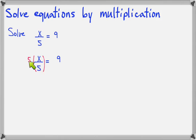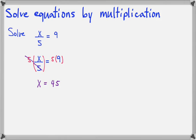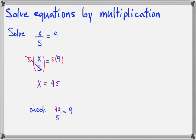Because I put a 5 in the top of the left side, I'm now going to put a 5 in the top for the right side. Now the 5s will cancel, and all I'm left with is x equals 5 times 9, which is 45. And if you check it out, if you put 45 in the place of x, you see that 45 divided by 5 does equal 9. So the left side is 9, and the right side is 9.